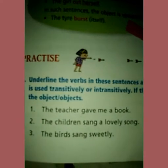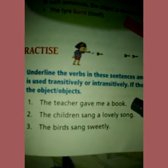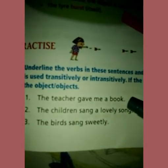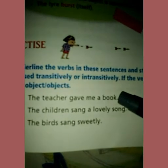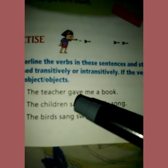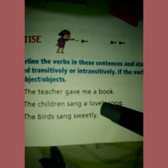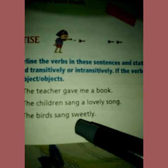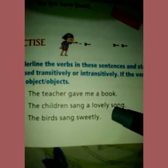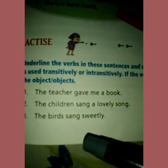Let's see some examples. The teacher gave me a book — is this transitive or intransitive? This is a transitive verb. Why? Because 'book' is the object in this sentence. Teacher ne mujhe book di — dene ka kaam jo ho raha hai, woh kaun receive kar raha hai? Book. Now, the children sang a lovely song — here object hai na? Song. So this is also transitive.